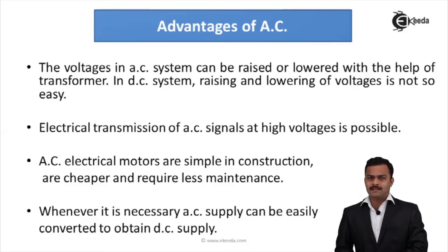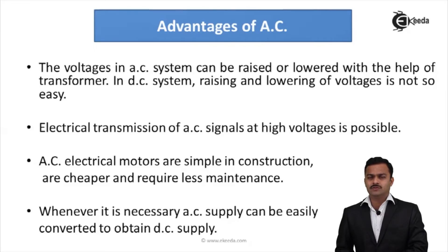Lowering or raising of DC voltage level is not that easy. Since we can raise AC voltage to very high values, electrical transmission — which we see in most transmission lines spanning almost a thousand kilometers — can carry very high AC voltage levels. This facility is not easily available with DC, so transmission at high AC voltage is possible.